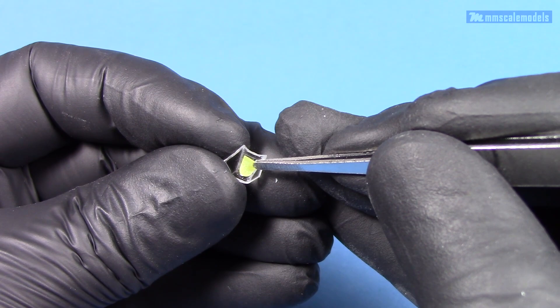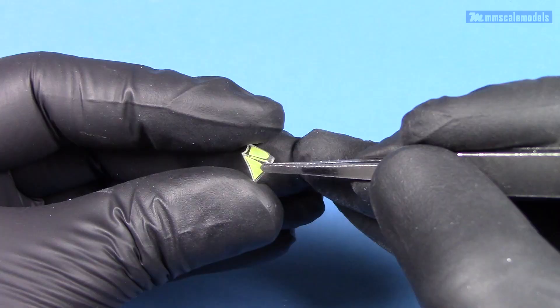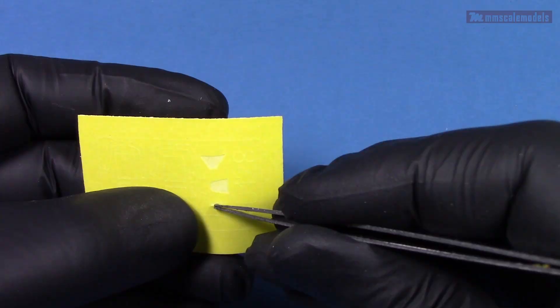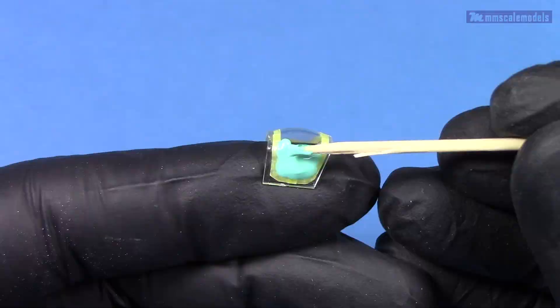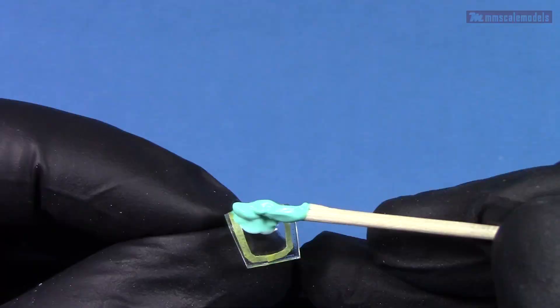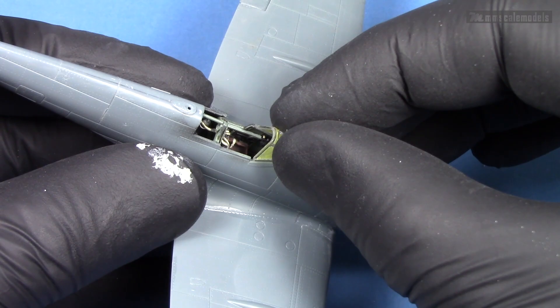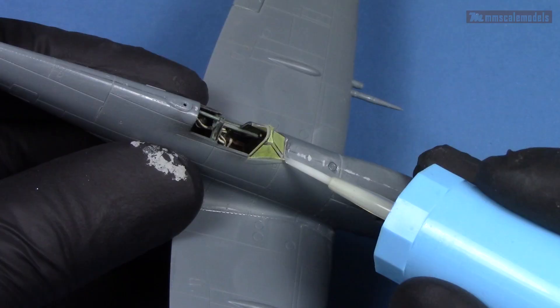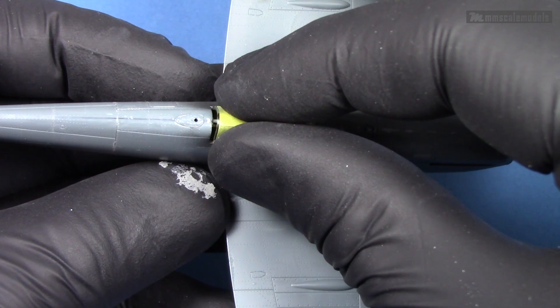The pre-cut canopy masks are very welcome addition to the ProfiPak kits. I have had issues with poor fitment of Edward masks but never on one of their own kits so here they work brilliantly. Some masking fluid is required to complete the masking of the sliding portion of the canopy but that's easy enough to do.